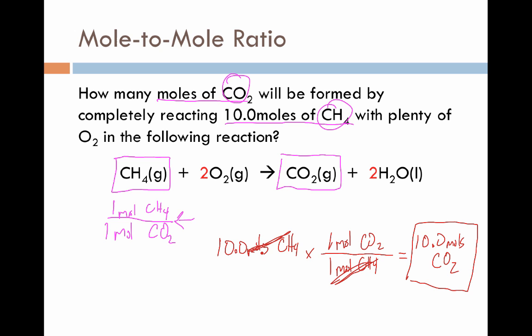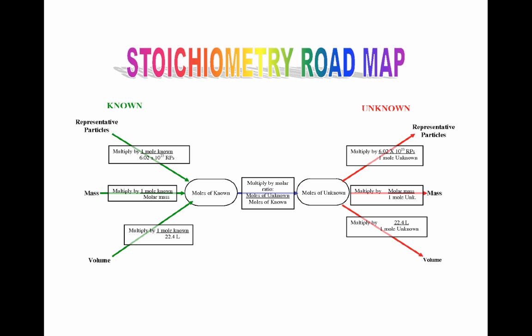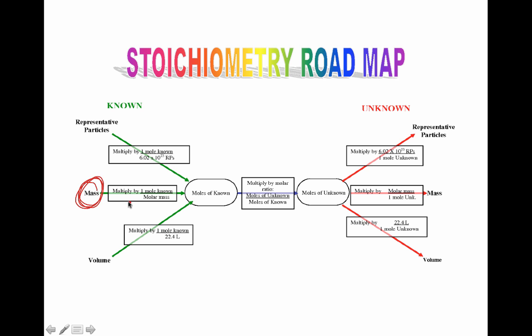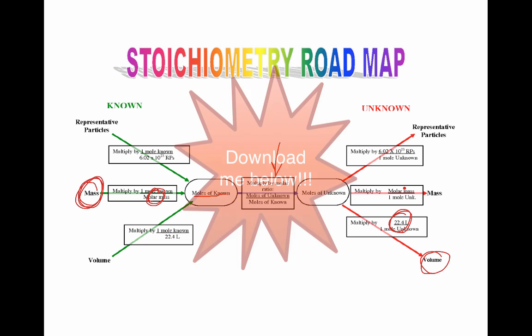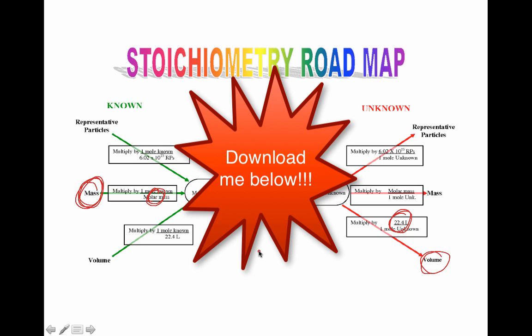As problems get trickier, we'll introduce units other than moles. Having a flowchart document might be helpful. For example, if you start with mass, your first conversion would use the molar mass of your substance to get into moles, allowing you to then apply the mole-to-mole ratio. If the answer is needed as a volume of gas, you'd add a final conversion from moles to that volume. This flowchart is available at the bottom of the page — you can pause, download, and print it, and it may be a valuable tool for your first round of stoichiometry problems.